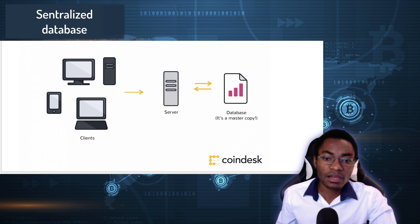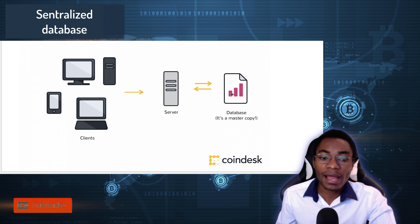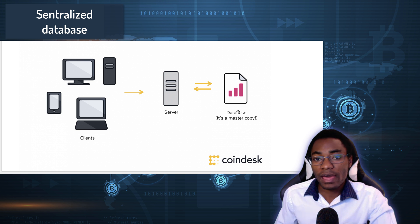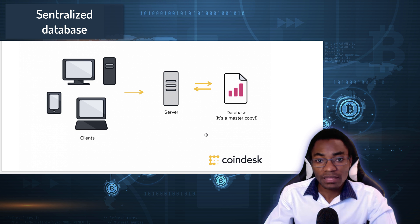Let's say that you have Wikipedia on this server here, and you want to access information from the server. You have to send a request to the server, and the server has to find the information you're looking for in the database and send it back to the client — you are the client, the server is Wikipedia. And this way, we know that only Wikipedia has the right to change the information on the server, to protect the information they have so no one can go and do anything about it.